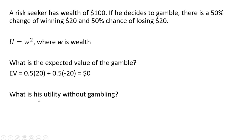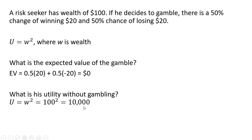What is his utility without gambling? His wealth without gambling is $100, so plugging this $100 into the utility function, we get a utility of $10,000.